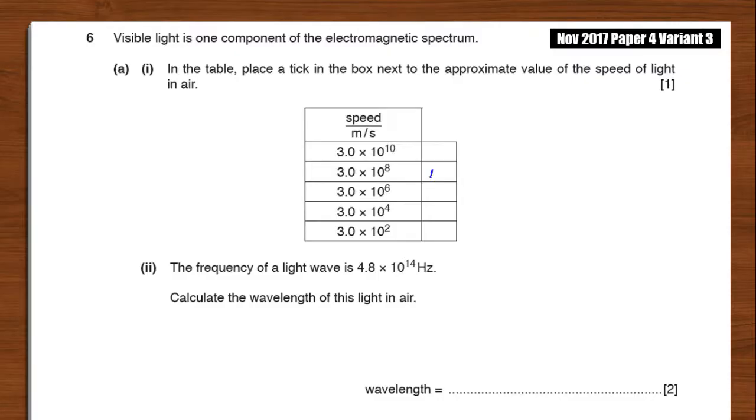The speed of light in air is 3 times 10 power 8 meters per second. The frequency of light waves is 4.8 times 10 to the 14 Hz - that frequency, that is F. Calculate the wavelength.